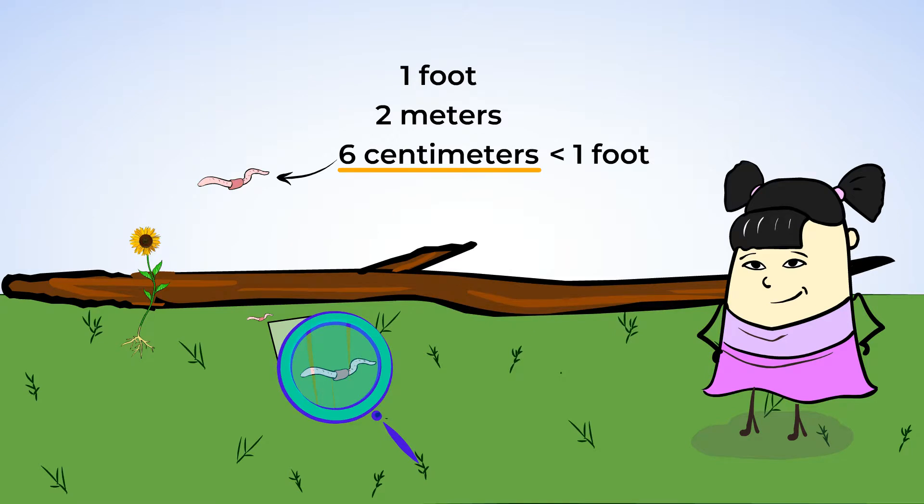The stick is definitely longer than the flower. We know that a foot is smaller than a meter, so a foot is also smaller than 2 meters. This means that a good estimate for the flower is 1 foot, and a good estimate for the stick is 2 meters.